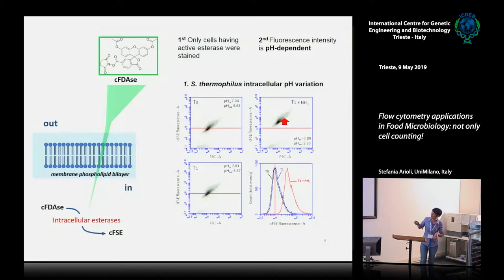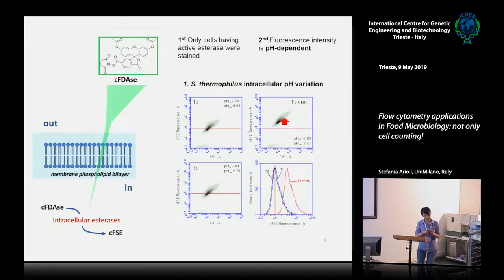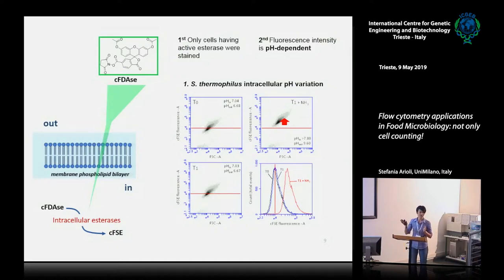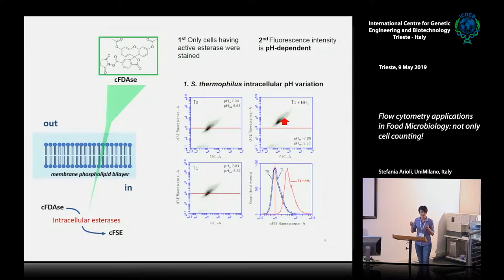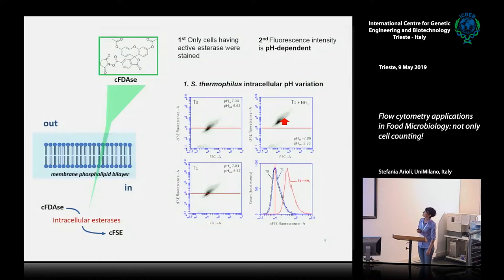You may wonder how we can correlate a fluorescence value with an intracellular pH — with a standard curve. We labeled cells with carboxyfluorescein and placed them in buffers at different pH values from 4 up to 8, obtaining a particular fluorescence for each particular pH. With this standard curve, we could determine the intracellular pH.